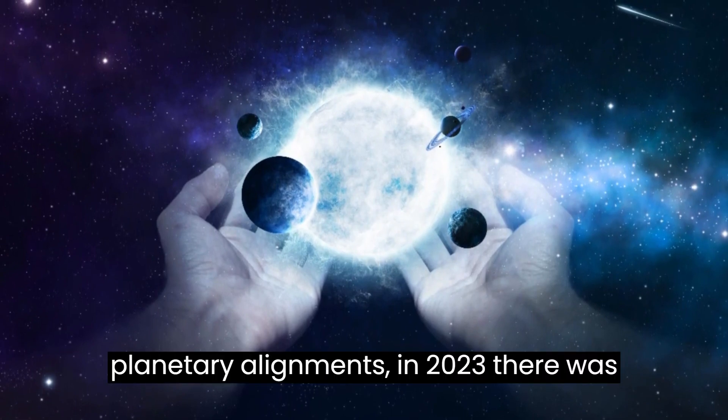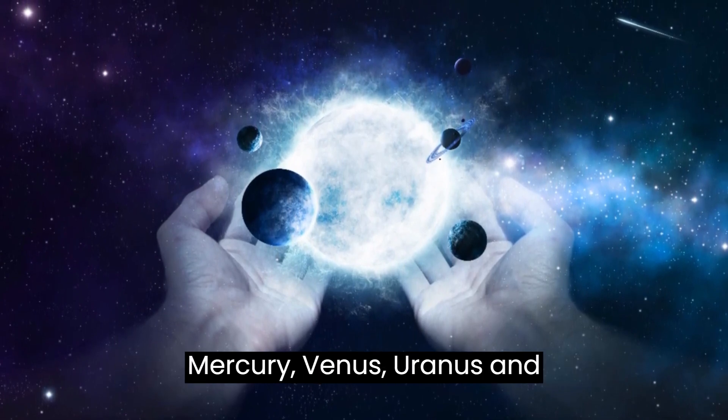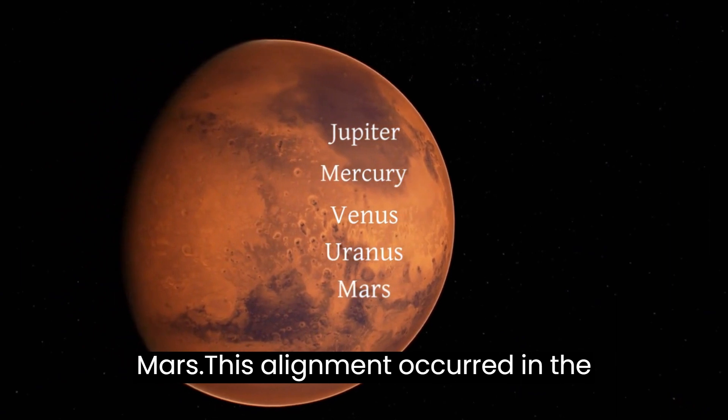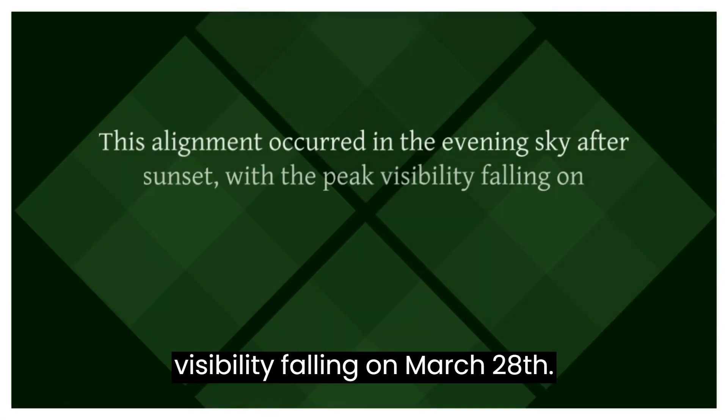Regarding other planetary alignments in 2023, there was already one in March featuring Jupiter, Mercury, Venus, Uranus, and Mars. This alignment occurred in the evening sky after sunset, with the peak visibility falling on March 28.